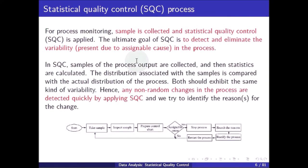For process monitoring, samples are collected and statistical quality control (SQC) is applied. The ultimate goal of SQC is to detect and eliminate variability in the process. In SQC, samples of the process output are collected and statistics are calculated. The distribution associated with the sample is compared with the actual distribution of the process — both should exhibit the same kind of variability — so any non-random changes in the process are detected quickly.